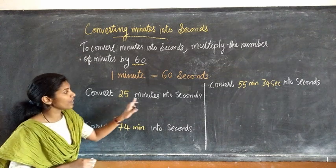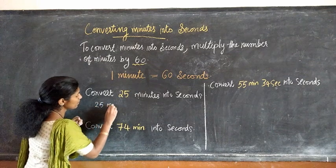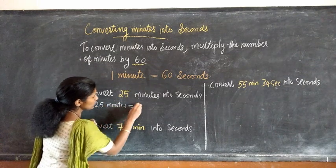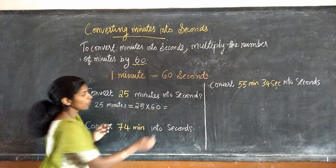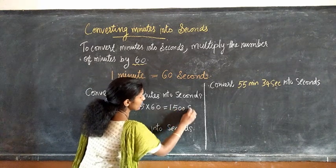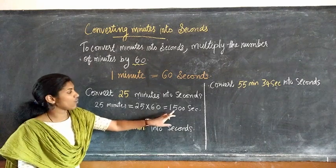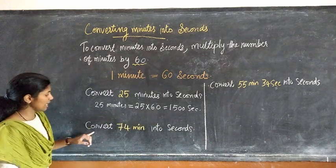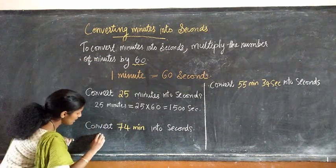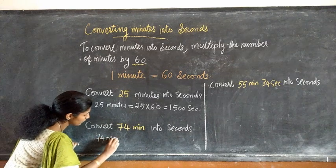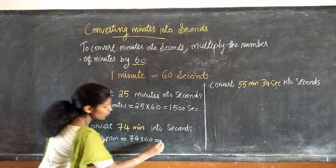Our last topic: converting minutes into seconds. To convert minutes to seconds, we have to multiply the number of minutes by 60. We know that 1 minute is equal to 60 seconds. First question: convert 25 minutes into seconds. 25 minutes equal to 25 into 60. When we multiply, we get 1500 seconds.